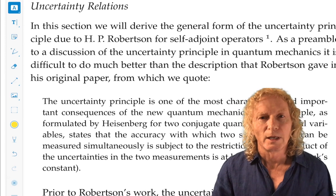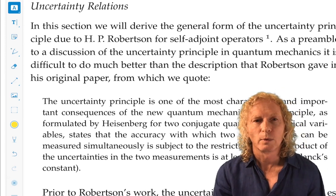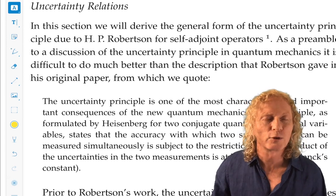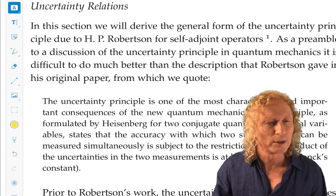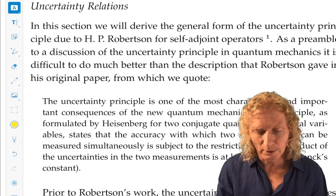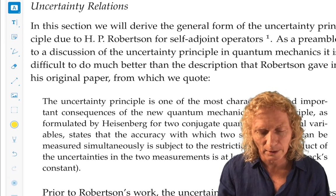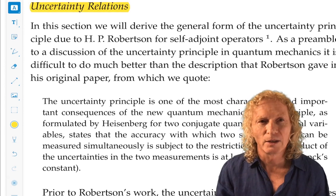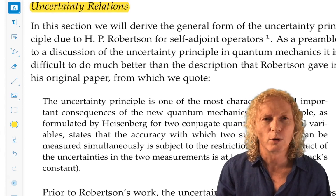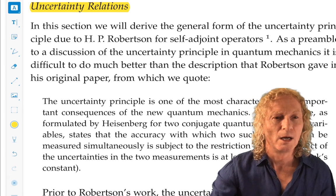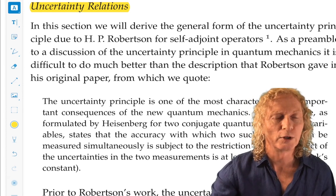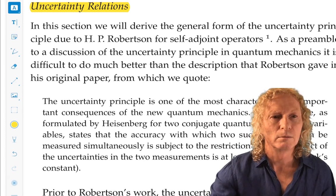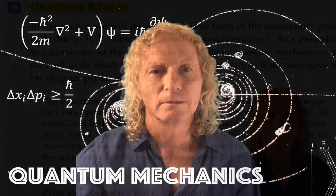So, I'll stop there for today. Now we've seen two examples, that's the first big example how commutators are used. Next, we're going to consider uncertainty relations. And commutators will play a big role in our consideration of uncertainty relations. So, until next time, bye.